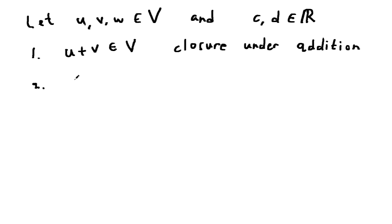The second property is that when you add u and v, it's the same as adding v plus u. This is called commutativity under addition.